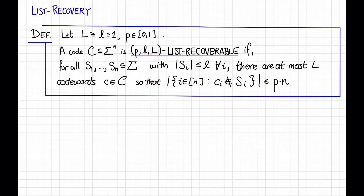little l, big L list recoverable if for all sets S1 up to Sn, which are subsets of sigma of size at most little l, there are at most capital L codewords C that disagree with the lists in at most a p fraction of the places. That is, so that the number of i's, so that the ith symbol of C is not in the ith list, is at most p times n.